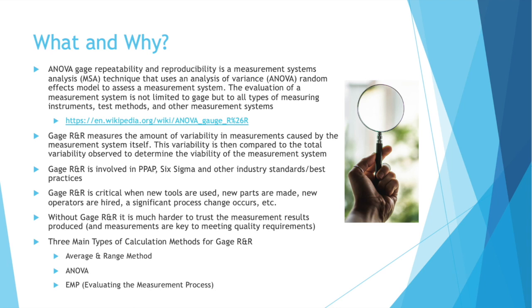There are three main types of calculation methods to determine the gauge R&R of your measurement system. The Average and Range Method, ANOVA, and EMP, which stands for Evaluating the Measurement Process.